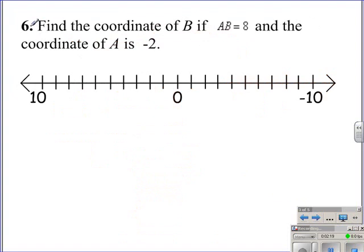Find the coordinate of B if the measure of segment AB is equal to 8, and the coordinate of A is negative 2. So we are going to plot point A on the number line at negative 2. Now if the measure of AB is 8, that means there is going to be two possible solutions here. AB is equal to 8 means the measure of segment AB.